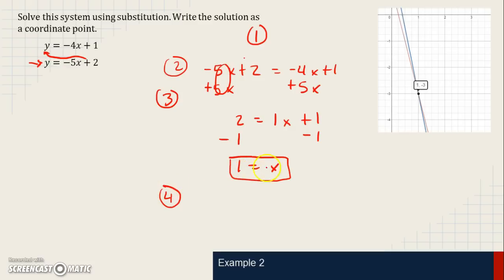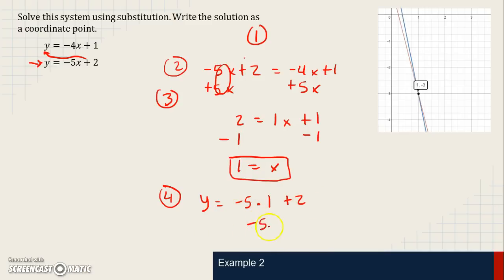Step 4: substitute the value for x back into the original isolated equation. We have y equals negative 5 times 1 plus 2. Simplifying: negative 5 times 1 is negative 5, plus 2 is negative 3. So y equals negative 3.